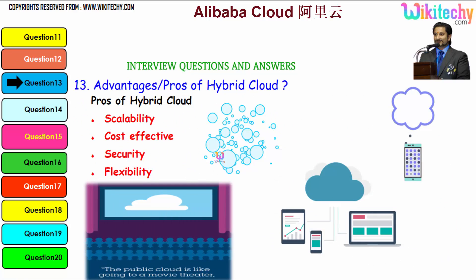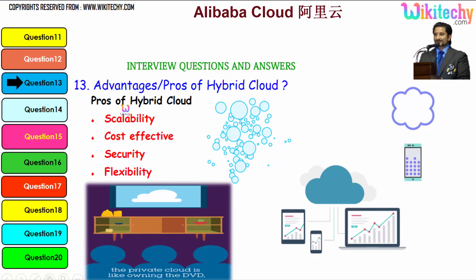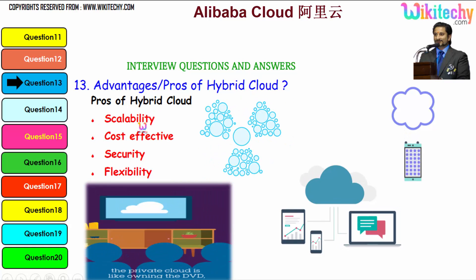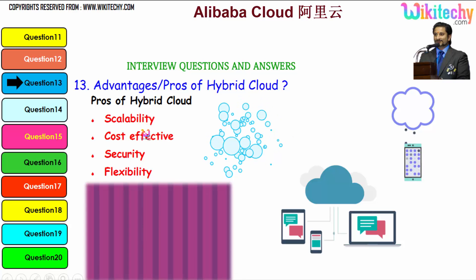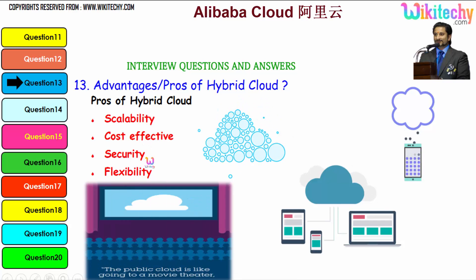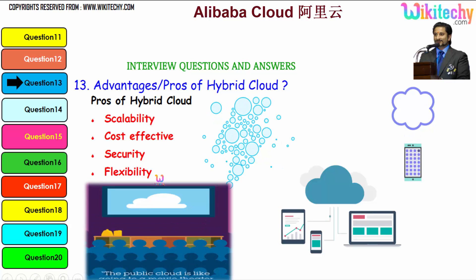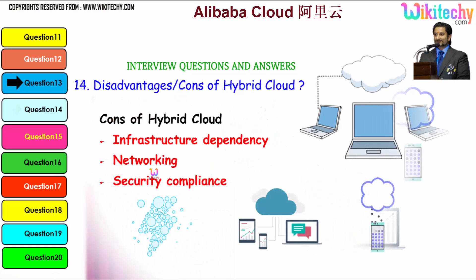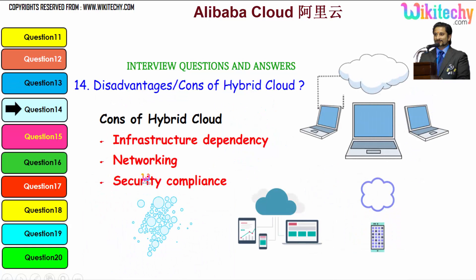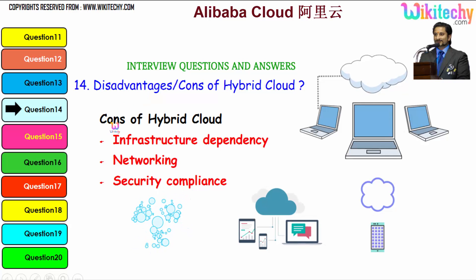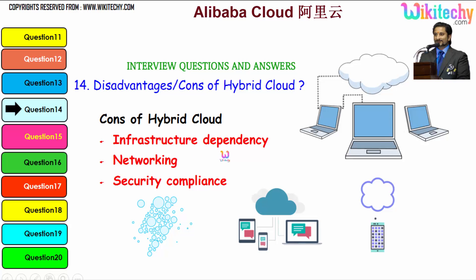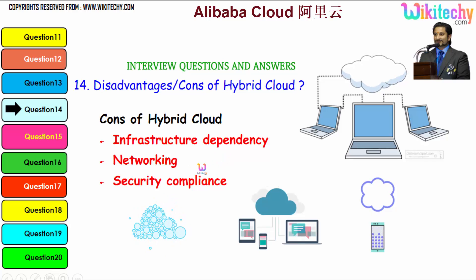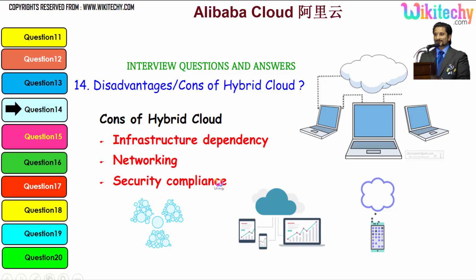The advantages of a hybrid cloud are: it is scalable — you can extend it as much as you can; it is cost effective; it has security; and you get more flexibility. These are the major advantages of hybrid clouds. The disadvantages are majorly infrastructure dependencies — networking-wise you have a lot of dependencies, and security compliance also has a lot of dependencies.